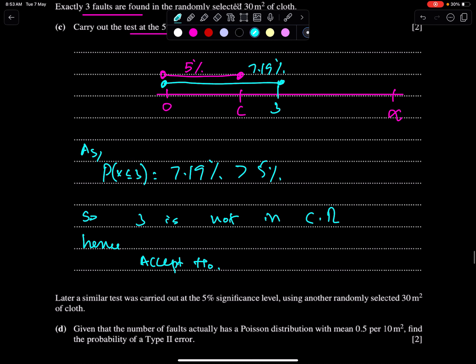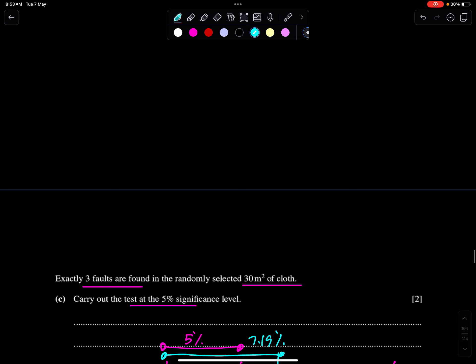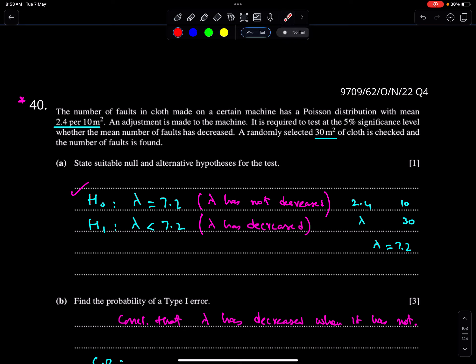Hence, accept H0. Since 3 is not in critical region, so accept H0. That is, insufficient evidence that lambda has decreased. You can write in this way, or you can write sufficient evidence that lambda has not decreased, but it's better to write this thing. When you are accepting H0, then mention this thing: insufficient evidence that lambda has decreased.